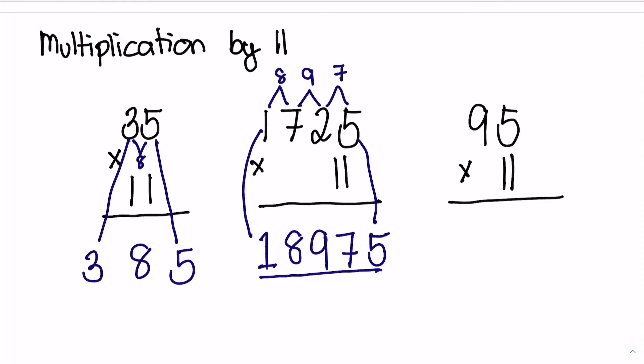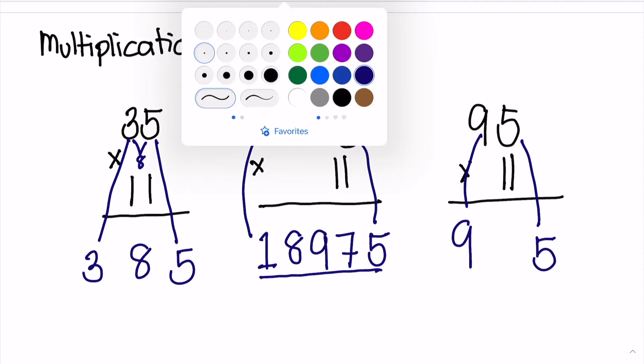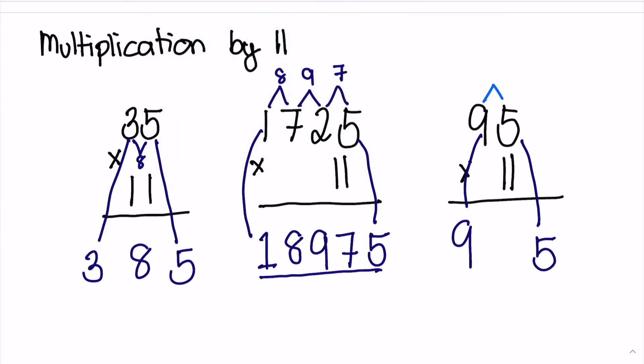But sometimes you will encounter carries. For example, 95 times 11. You copy 9, you copy 5. But then if you add 9 and 5, that will result to 14. So you will carry 14, 1 and 4. Bring down 5, bring down 4. 1 plus 9 is 10. So this will be your answer.